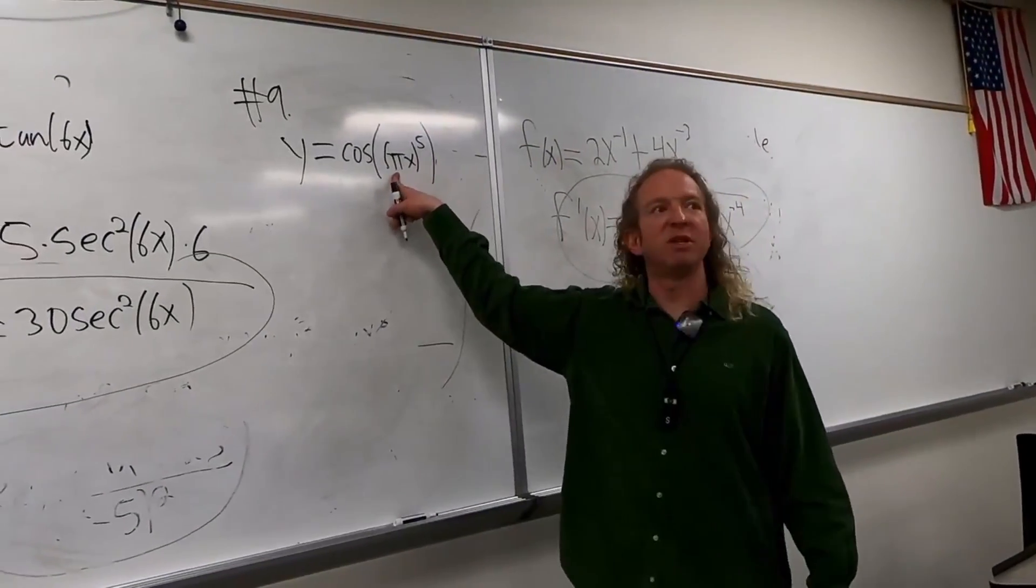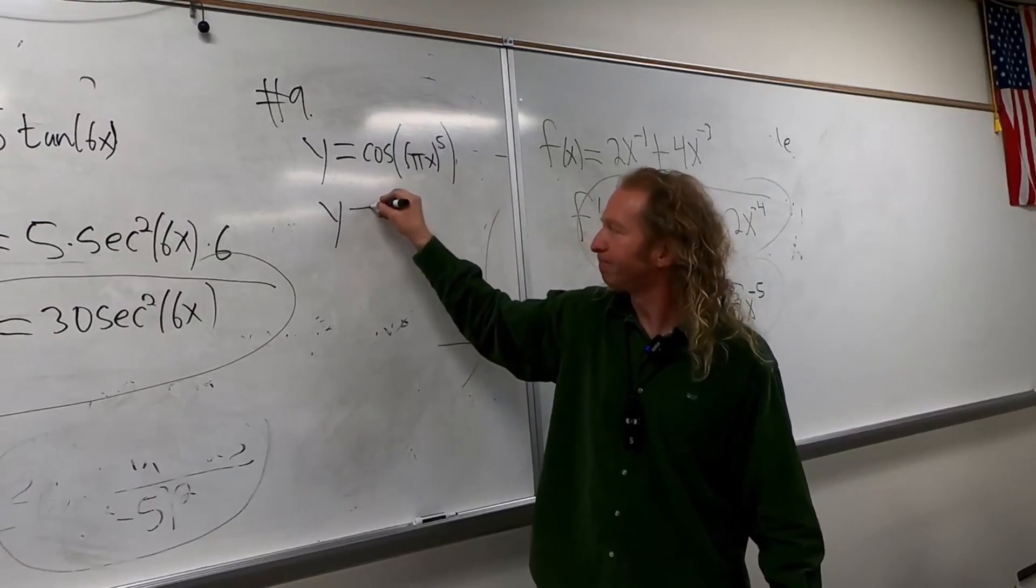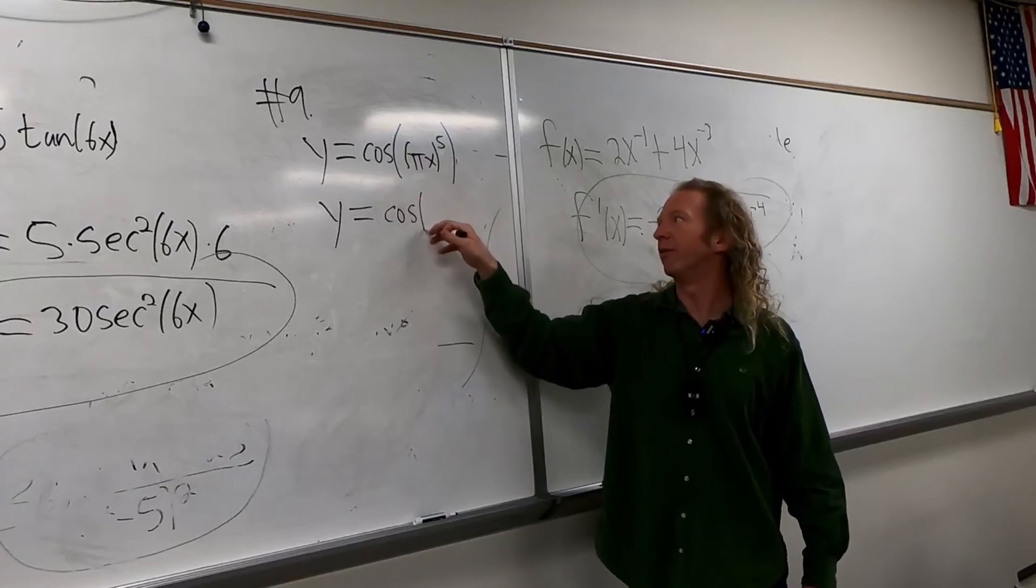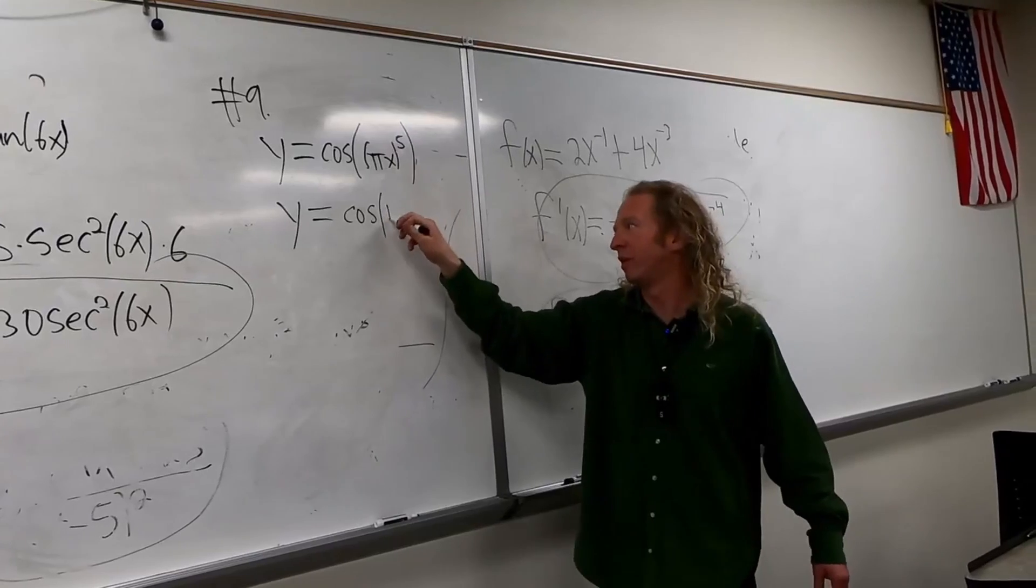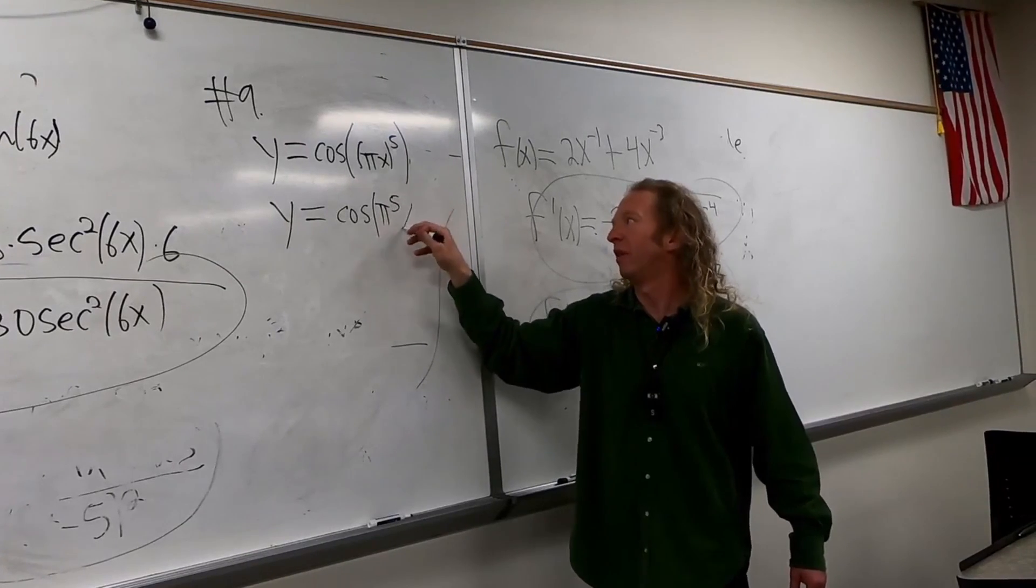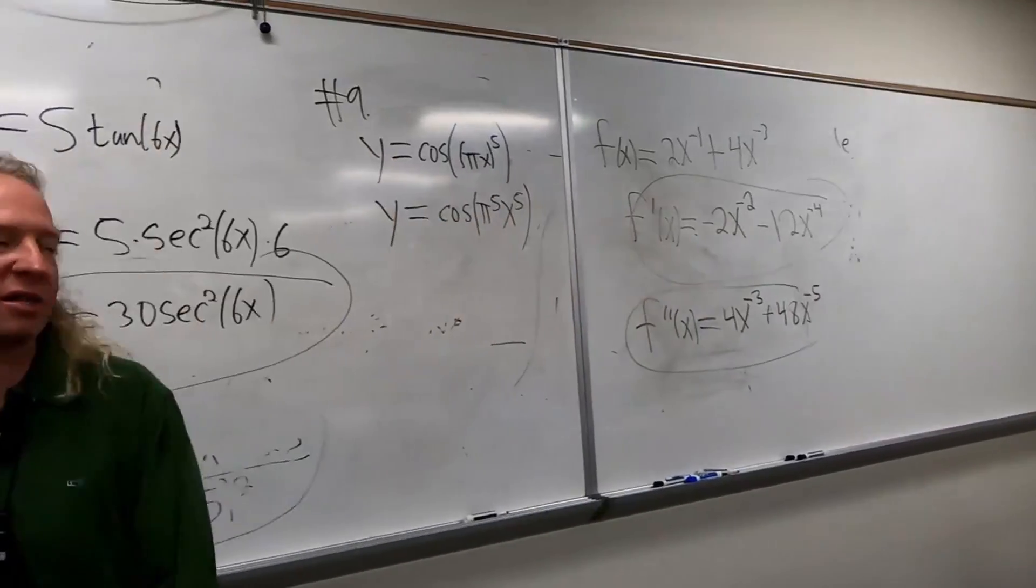We can raise each of these pieces to the fifth power on the inside. So it's still y, so this is cosine of pi to the fifth x to the fifth, right, pi to the fifth x to the fifth.